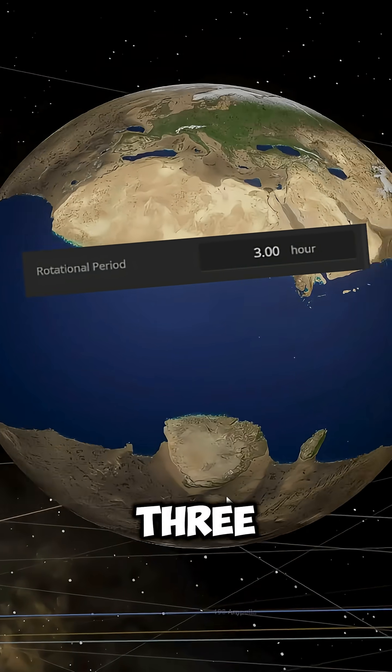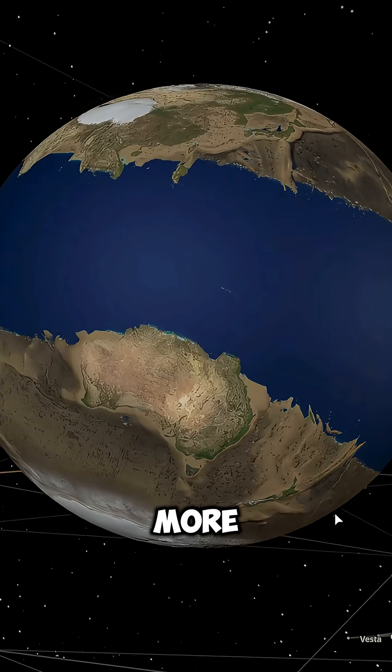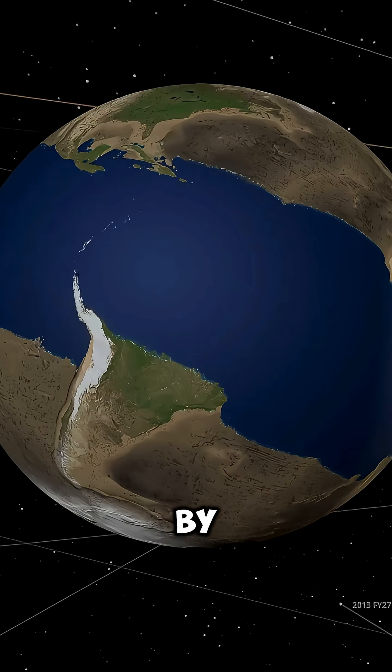But what if a day lasted only three hours? In that case, Earth would deform even more, and the planet would be completely divided by a huge ocean.